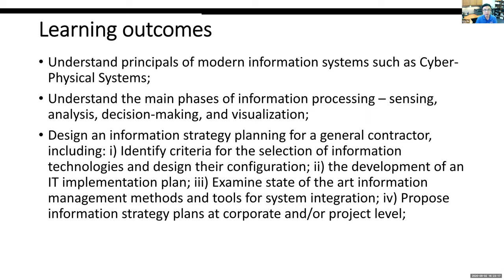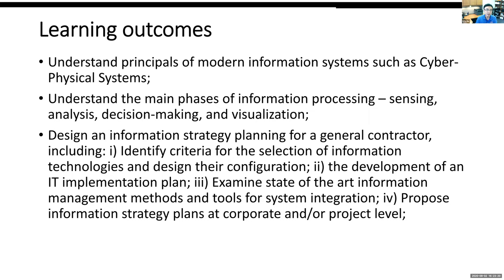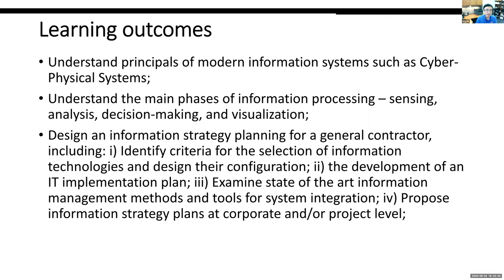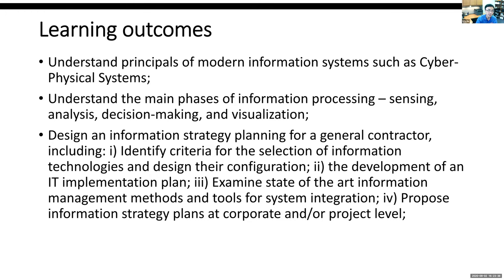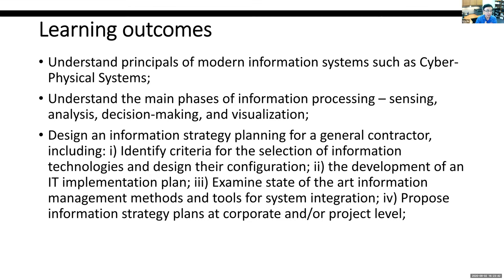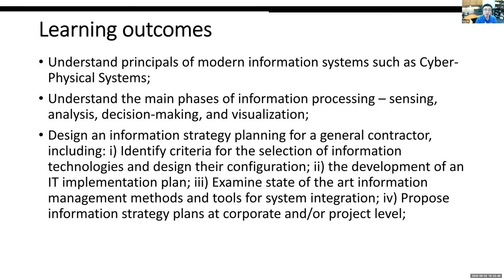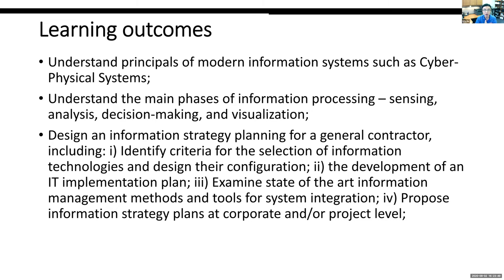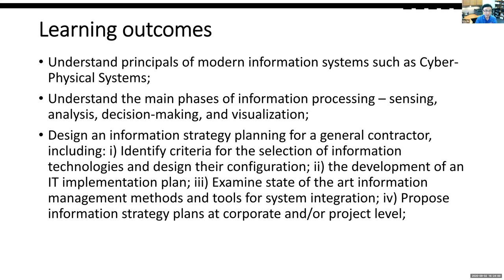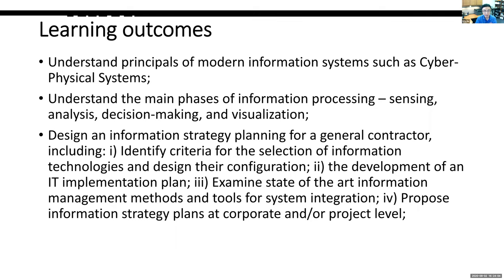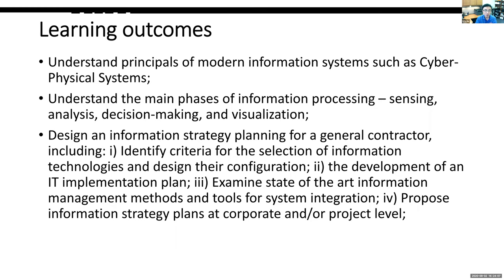Learning outcomes: we want to understand the principles of modern information systems such as cyber-physical systems, and the main phases of information processing — from sensing to analysis to decision-making to visualizing results. Topics are organized based on different phases of information processing. You should also be able to design information strategy planning for a general contractor, including criteria for technology selection, configuration design, implementation planning, and examining state-of-the-art information management methods for system integration at the corporate and project level.